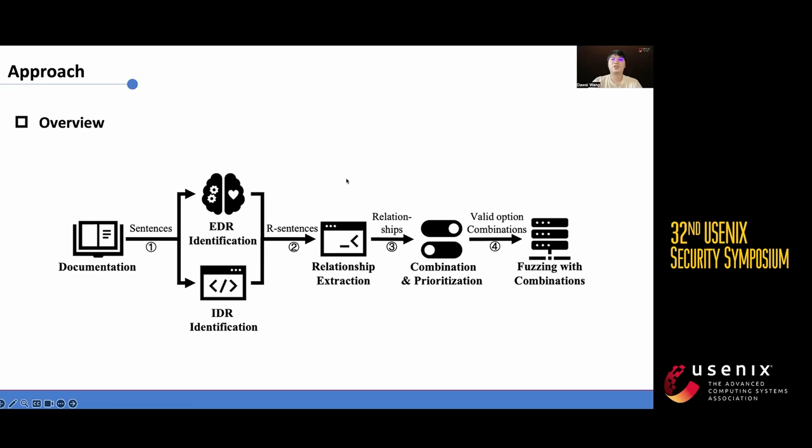To address the aforementioned challenges, we introduce Copy the Fuzz, an NLP-based fuzzing assistant tool designed for extracting option constraints. Given a documentation,